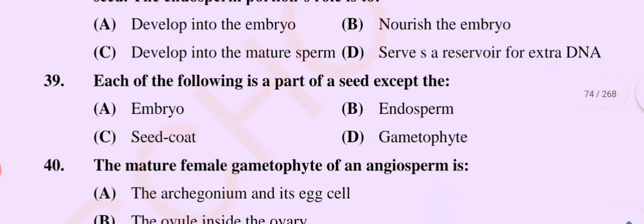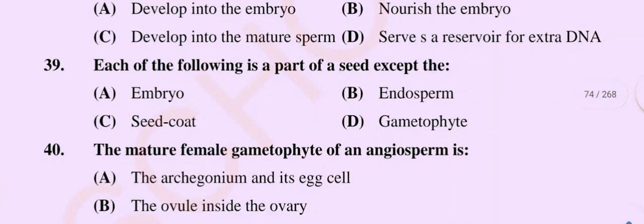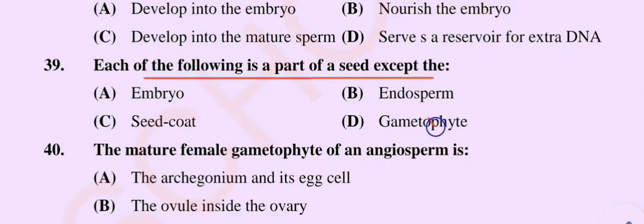Question number 39: Each of the following is a part of a seed except — option A embryo, option B endosperm, option C seed coat, option D gametophyte. The correct option is option D: gametophyte.